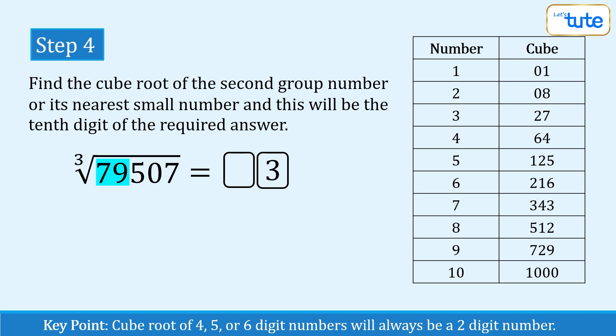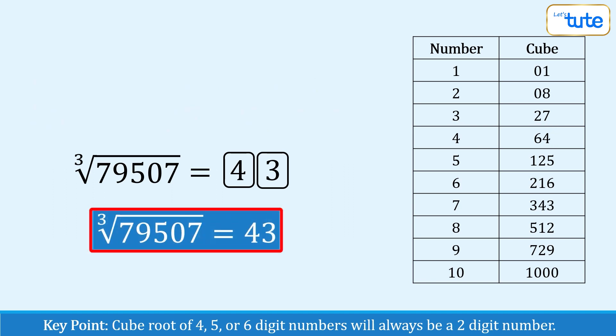So can you find a number whose cube is 79? No, as 79 is not a perfect cube number, so we have to find the closest perfect cube number which is less than 79. It's 64 and the cube root of 64 is 4 and this will be the second digit of the cube root of 79507 and here is the answer. The cube root of 79507 is 43.